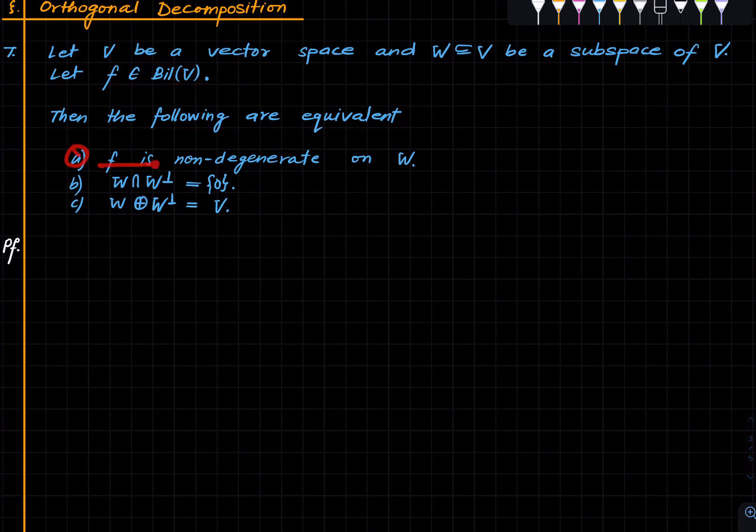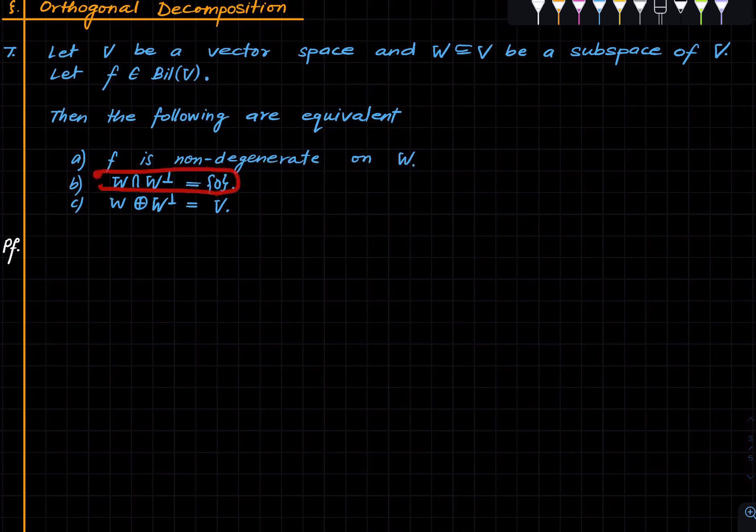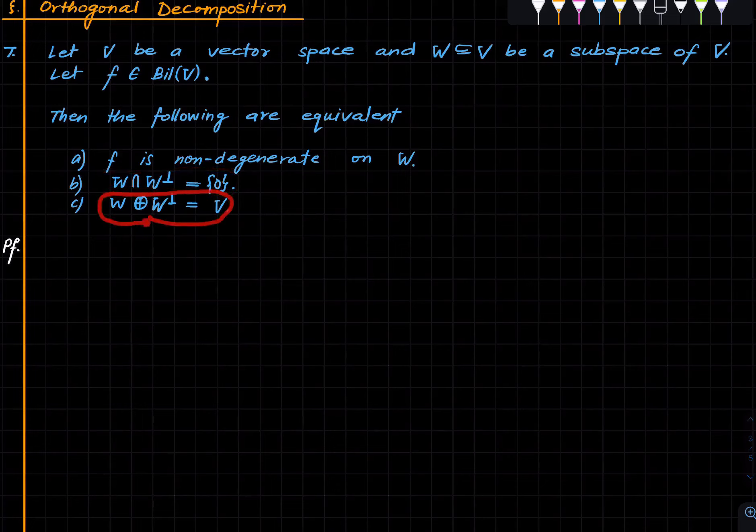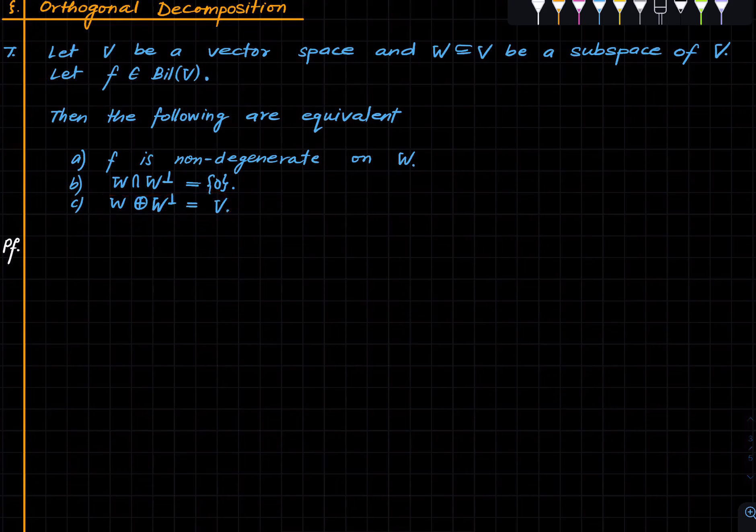First, F is non-degenerate on W. Second, W and its orthogonal complement intersect trivially. Third, V is the direct sum of W and its orthogonal complement. It's a very interesting theorem and now let us prove it.